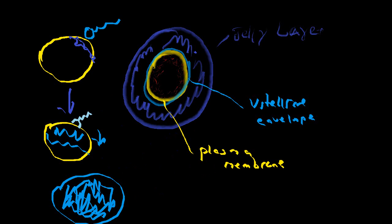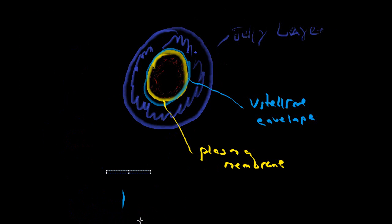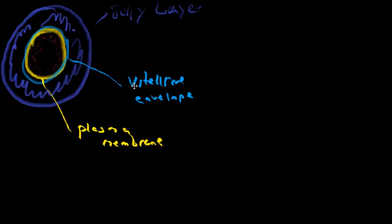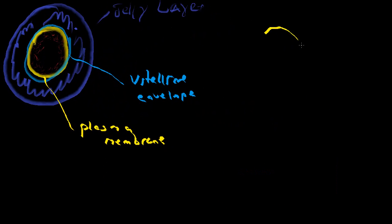Now let's go over the slow block. This occurs just after depolarization. Let's say this was the plasma membrane. Shortly after fertilization of the egg, the cortical granules, just inside of the plasma membrane, release calcium towards the outside, in between the plasma membrane and the vitellin envelope.